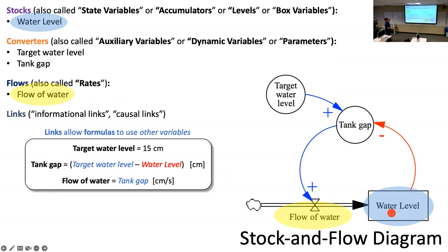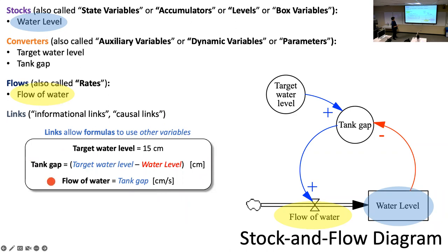Those expressions include formulas inside the flows, formulas inside the converters, the initial conditions for stocks, and the time step dt. Target water level is 15; tank gap formula is provided; flow of water copies the tank gap. Units are included to help the reader: tank gap is in centimeters and flow of water is in centimeters per second. Units help debug logic — and some of you may notice that tank gap is in centimeters while flow of water is in centimeters per second, which flags a missing piece.